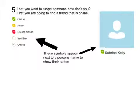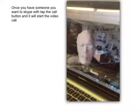I bet you want to Skype someone now, don't you? First, you are going to find a friend that is online. These symbols appear next to a person's name to show their status. Once you have someone you want to Skype with, tap the call button and it will start the video call.